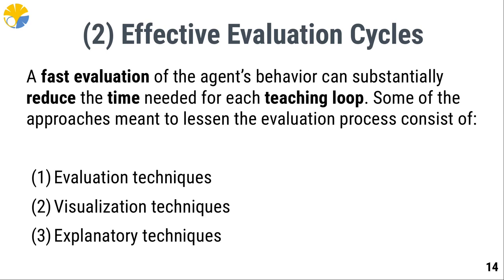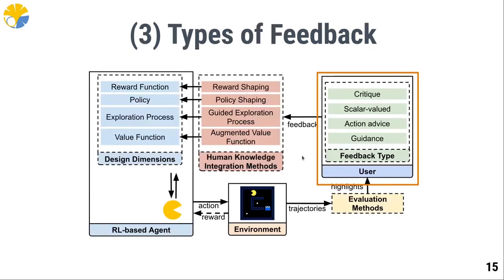For the third question about the communication channel between the human and the agent, we describe all the types of feedback that the user can provide. As we can see in this figure, in our survey we detail all the options the user has to give feedback and how each of them can modify the underlying RL algorithm. These feedback types can shape features of the RL algorithm such as the reward function, the policy, the exploration process, or the value function.